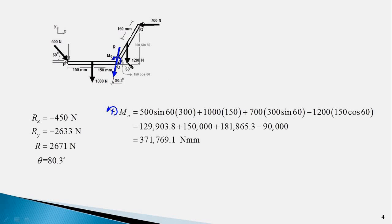The 1200 N force produces a clockwise moment about point O, with moment arm 150 cos 60, because the relevant distance is 150 mm at 60 degrees from horizontal. Therefore the last term is −1200 × 150 cos 60. Running this equation on a calculator gives the value of Mo — the positive value means the moment is in the anti-clockwise direction.